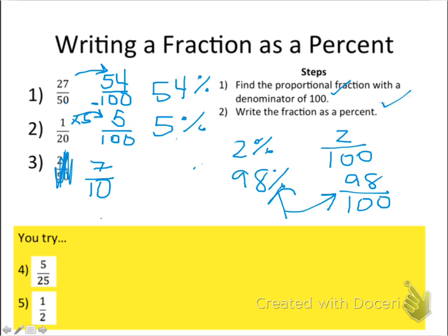Now, hopefully you tried 7/10 on your own. And if you haven't, pause it. Try it on your own. Now, I need to find the proportional fraction with the denominator of 100. What do I do to 10 to make it into 100? If you're not sure, you can always do the long division on the side. But I know that I multiply it by 10.